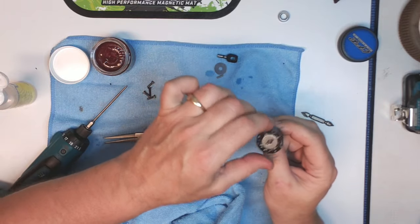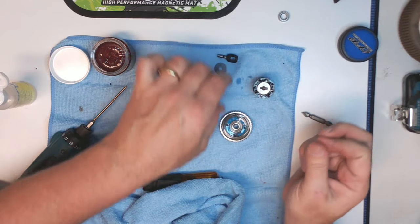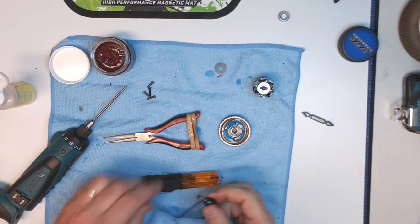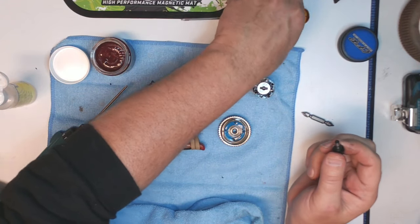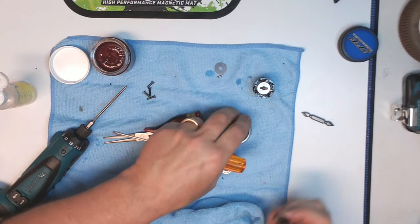Now we repeat the greasing process and put the bearing on the spur gear so I don't forget.